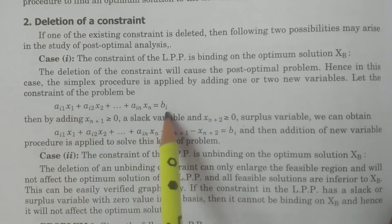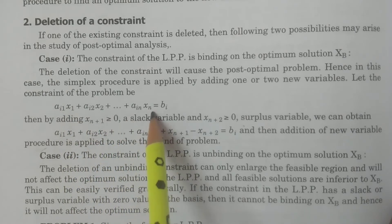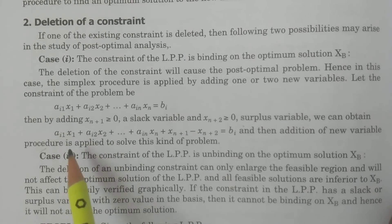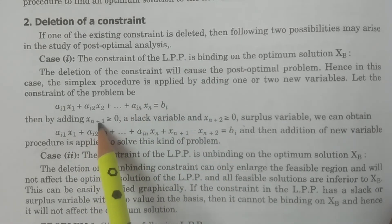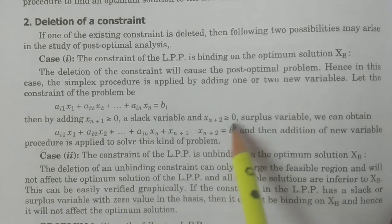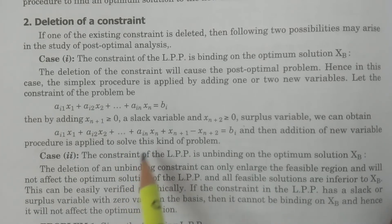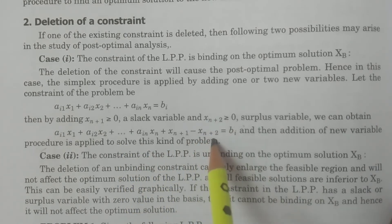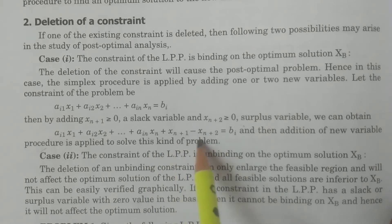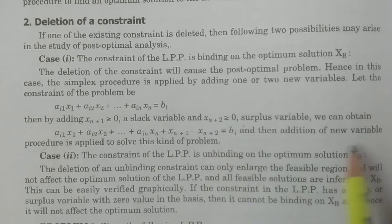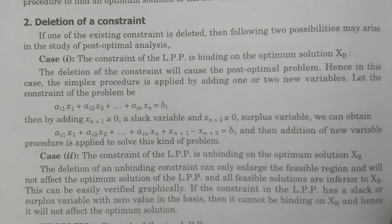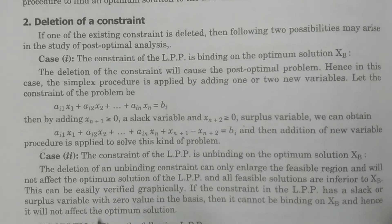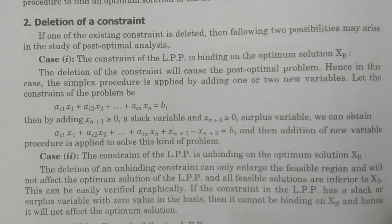For example, consider the constraint to be deleted: a_i1·x1 + a_i2·x2 + ... + a_in·xn = b_i. If it is binding to the optimum solution, then we add a slack variable x_{n+1} ≥ 0 and a surplus variable x_{n+2} ≥ 0, giving: a_i1·x1 + a_i2·x2 + ... + a_in·xn + x_{n+1} − x_{n+2} = b_i. Then the addition of new variable procedure is applied, which we have discussed clearly — that procedure is applied here to solve the problem.